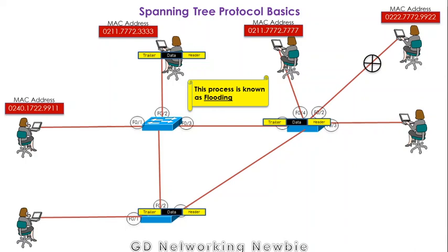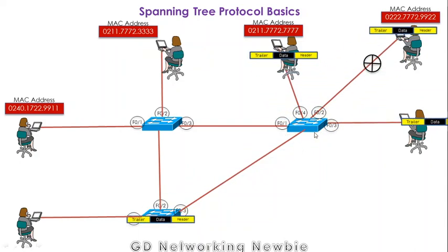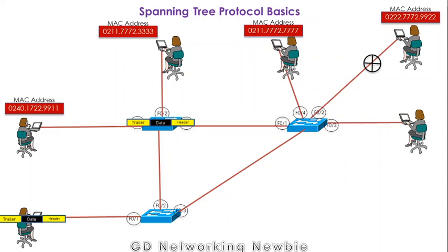By flooding, the switch has forwarded that frame to all connecting nodes. The next switch performs the same thing — it looks in its MAC table, finds no entry, and floods the frame to all nodes except the one it received it from. The frame then comes to the third switch, which also looks into its MAC table, finds no entry, and broadcasts the frame to all nodes.